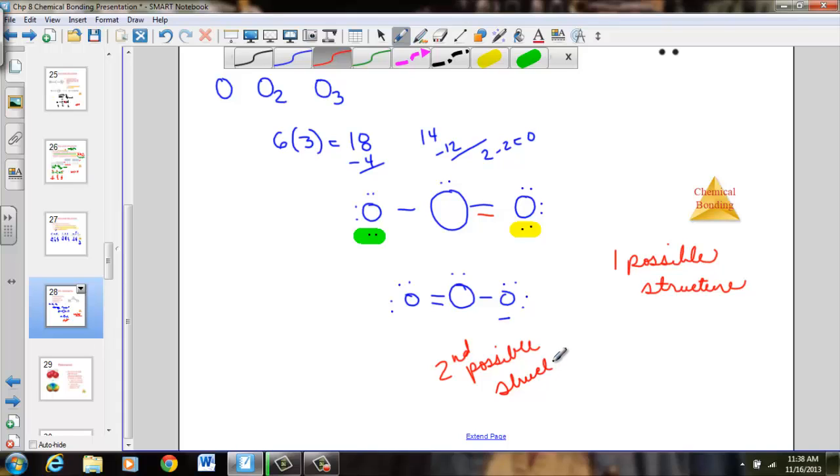This is the second possible correct answer. With this particular structure, how do I know if it is a double bond to the right, single to the left, or perhaps a double to the left and a single to the right? The answer is it's both. It's not one or the other, but it's a hybrid of both pictures.